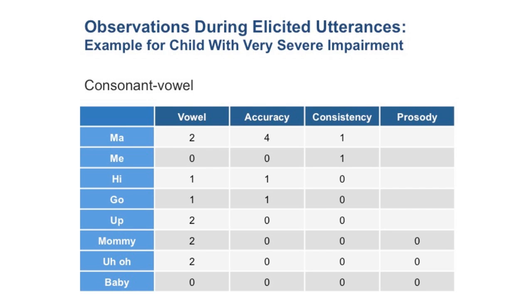Let's look at an example of a child with very severe impairment, similar to the child we've been discussing in this course. This is a dynamic assessment. We looked at vowel production — he correctly said MA, was consistent, and scored a 2 and a 4. But on most items, he's not producing the vowel correctly or is distorting it mildly — for hi, go, and baby.